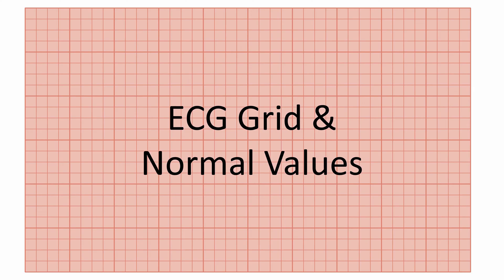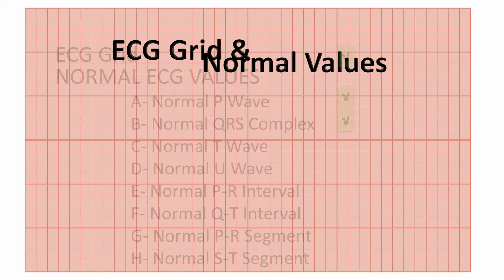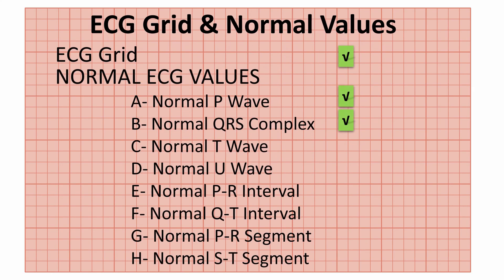In the last videos, we talked about the ECG grid and the normal P wave, QRS complex, and T wave. In this lecture, we will continue with the normal values of the U wave and the most important intervals and segments.